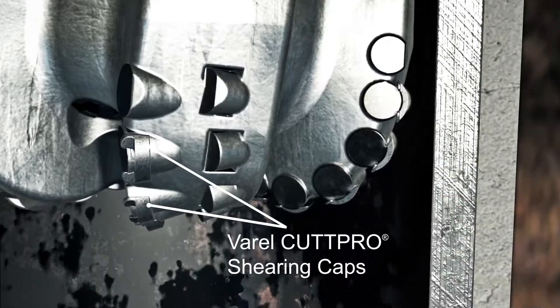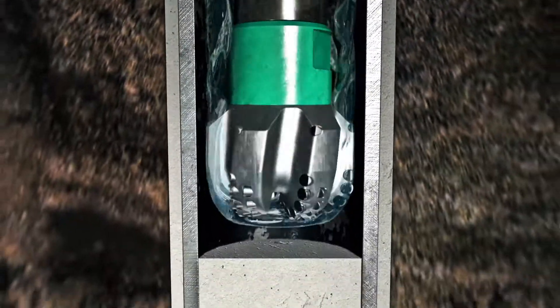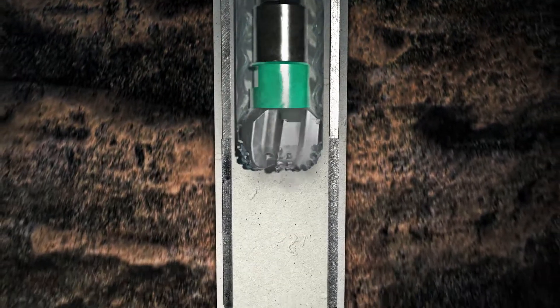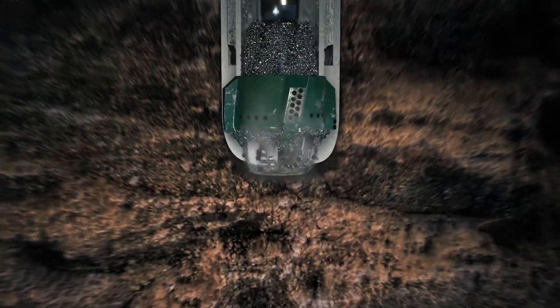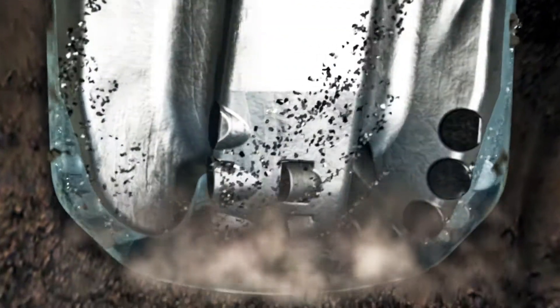Patented tungsten carbide CutPro shearing caps are brazed over the cutters of a formation-targeted PDC bit. The CutPro quickly and efficiently drills out a casing bit or guide shoe. Upon reaching formation, the caps quickly wear away, leaving a virgin, application-specific cutting structure in its place.